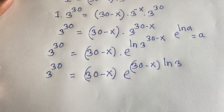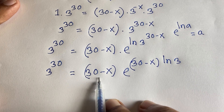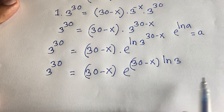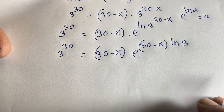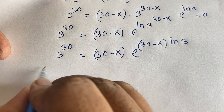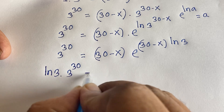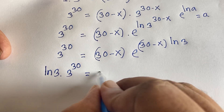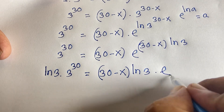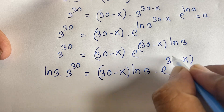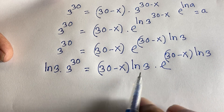To apply the Lambert W function, I need a matching coefficient. Here I have ln 3 and (30 minus x), but I need ln 3 on both sides. So I multiply both sides by ln 3, giving ln 3 times 3 to the power 30 equals (30 minus x) times ln 3 times e to the power ((30 minus x) times ln 3).